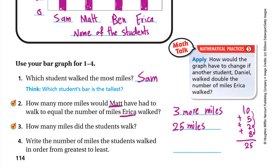Question four: write the number of miles the students walked in order from greatest to least. We arrange 10, 5, 2, and 8 from greatest to least: 10, then 8, then 5, then 2. Hope you guys enjoyed this lesson — have a nice day and goodbye!